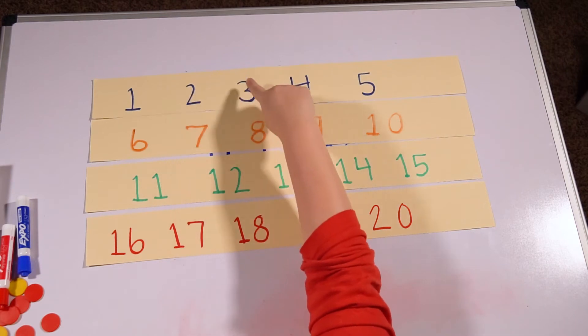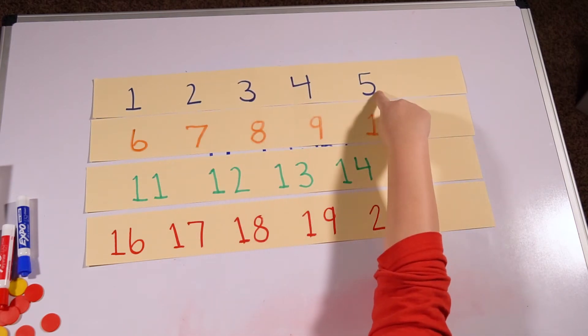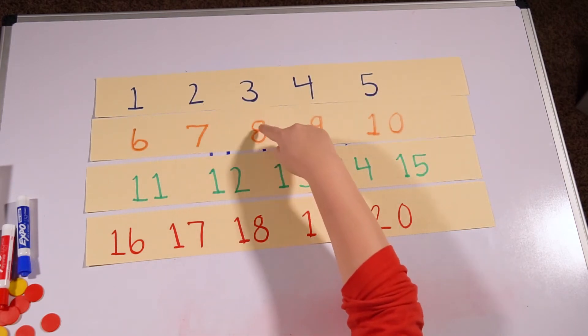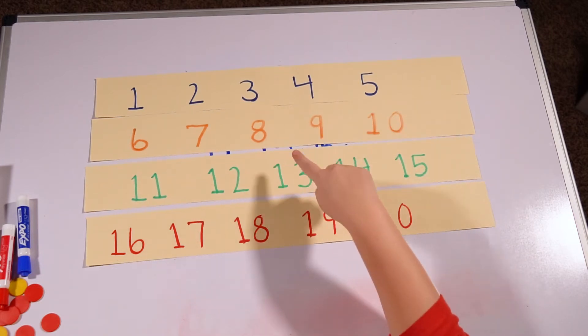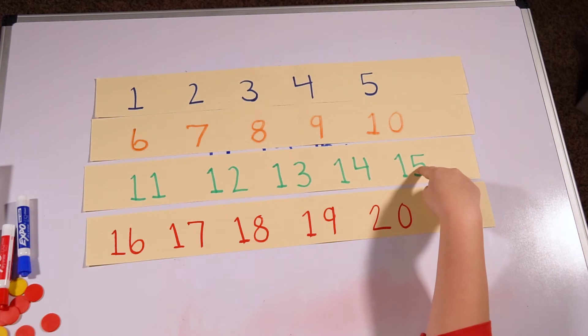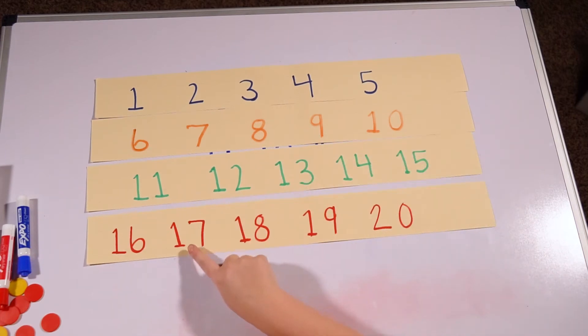One, two, three, four, five, six, seven, eight, nine, 10, 11, 12, 13, 14, 15, 16, 17, 18, 19, 20.